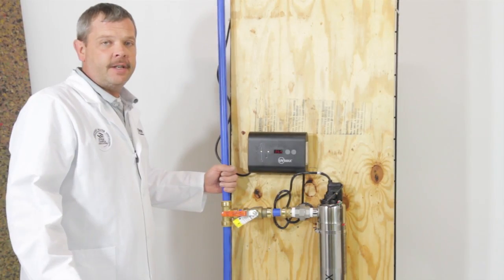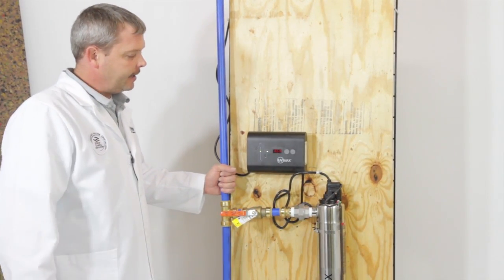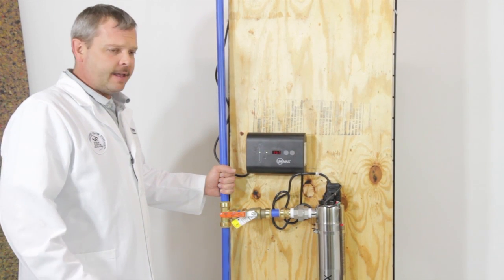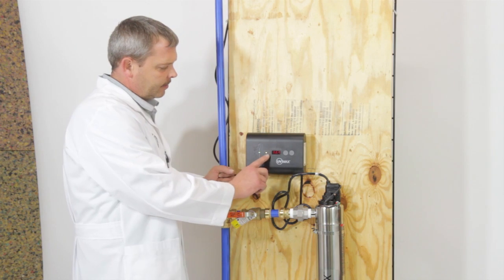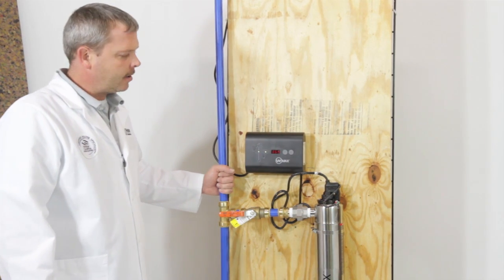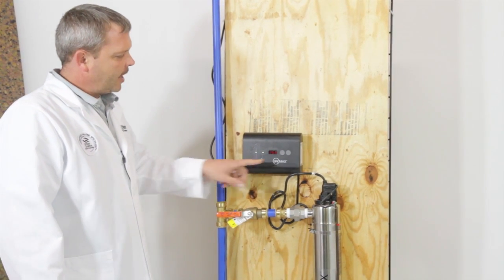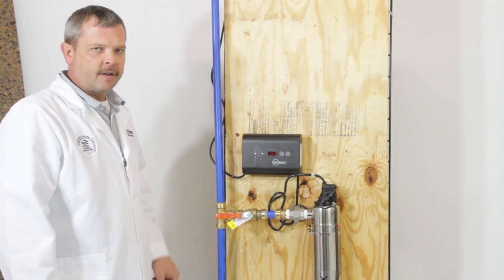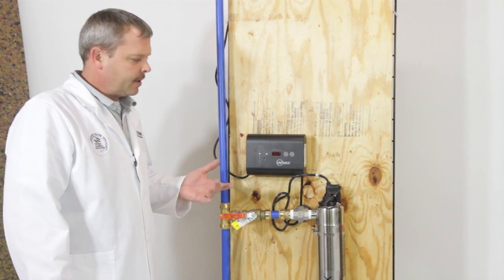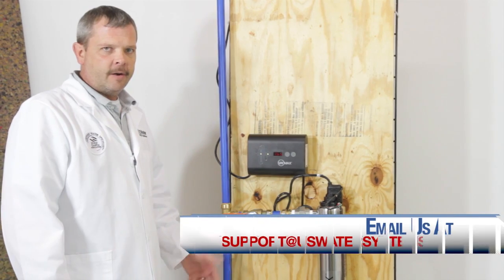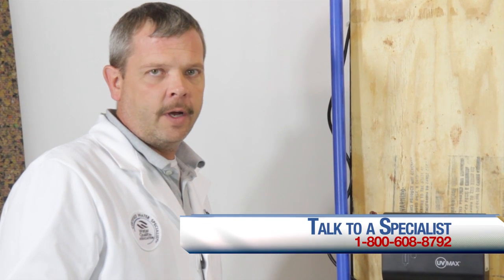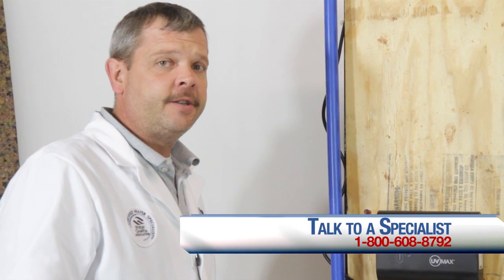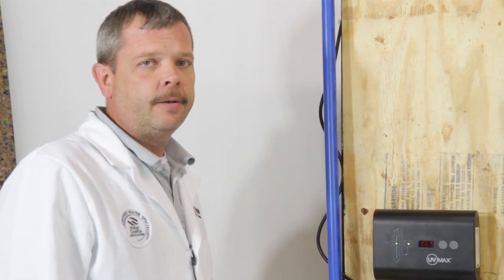This completes the installation of the UV Max UV light. Periodically check for your indicator lights, make sure they remain green, and then watch your days count down. When you get close to time, you can give us a call and reorder your bulb-sleeve combo so you're ready to replace it. If you have any other questions or concerns, you can give us a call or visit our website. Our phone number is 1-800-608-8792. Thanks.